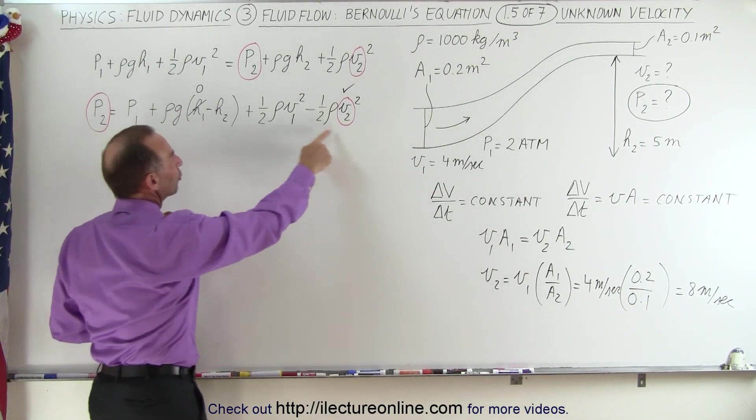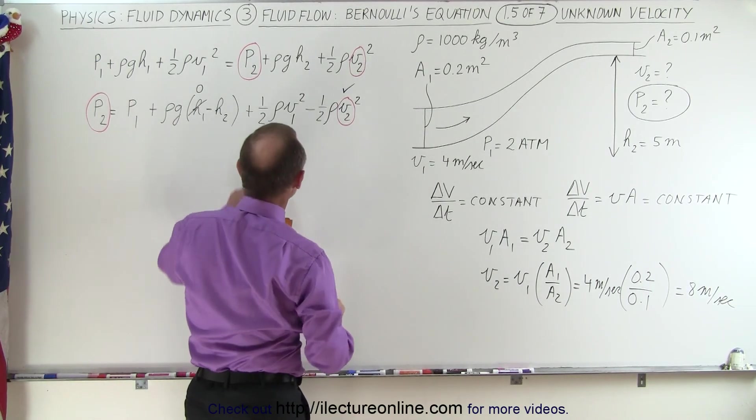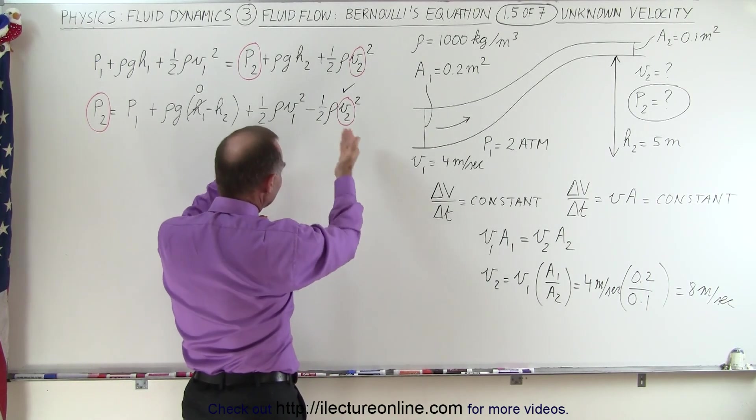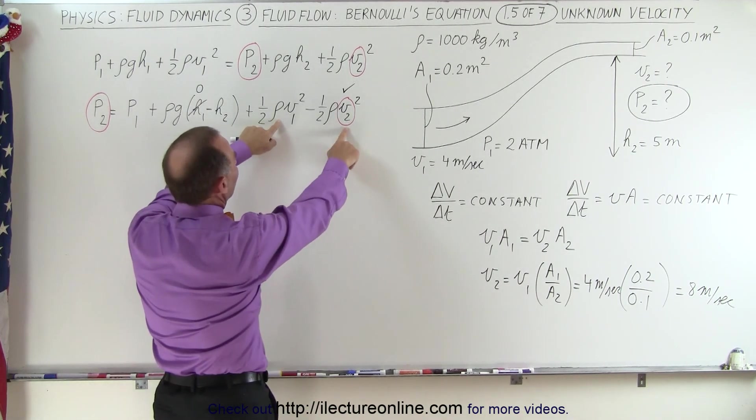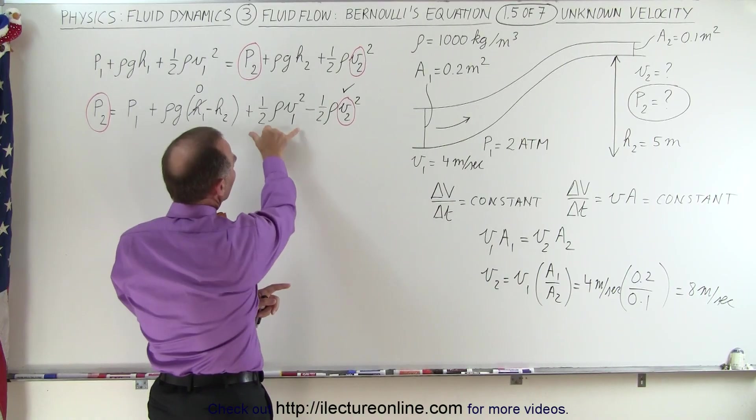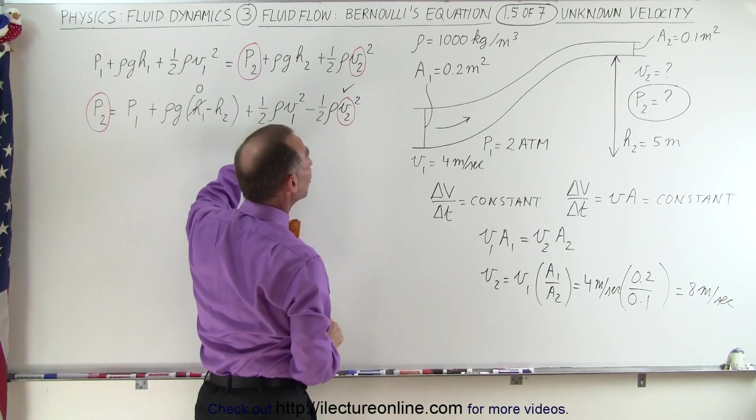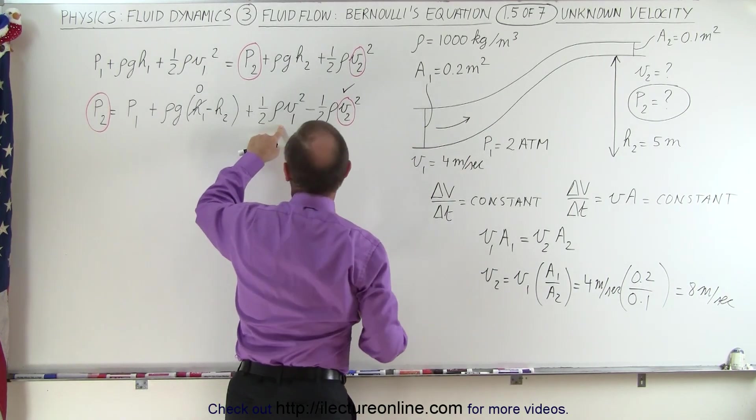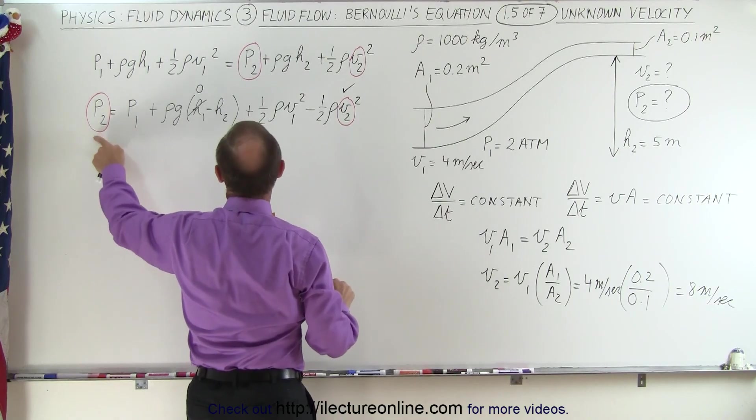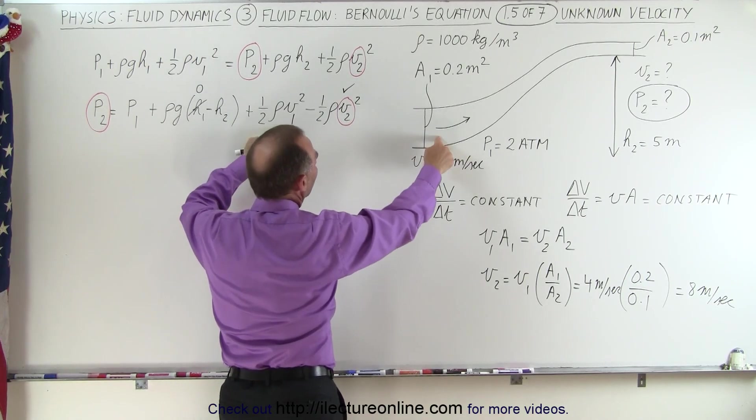The second term and the third term have to do with velocity. Notice that again it involves the difference in velocity but not to the first power, to the second power. So take a look at the second term right here, or in essence it's now the third term on the right side of the equation. Notice that has to do with the velocity at 0.1 so the pressure at 0.2 will be greater or smaller depending upon the velocity.